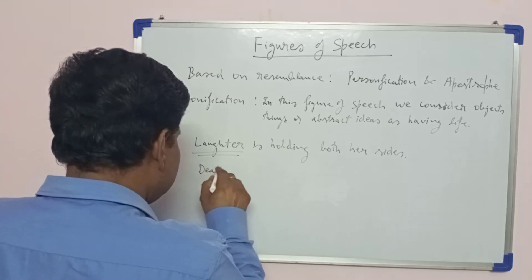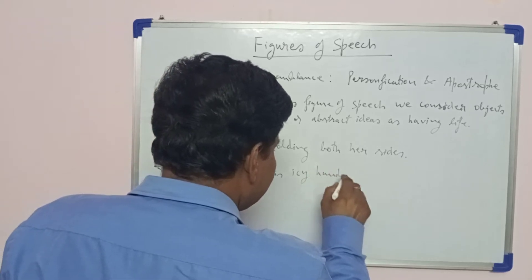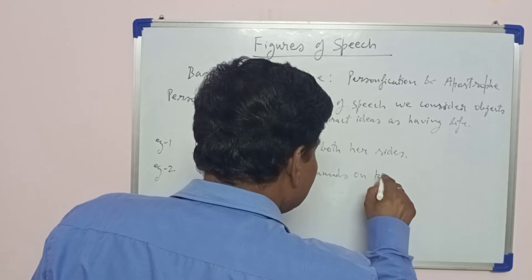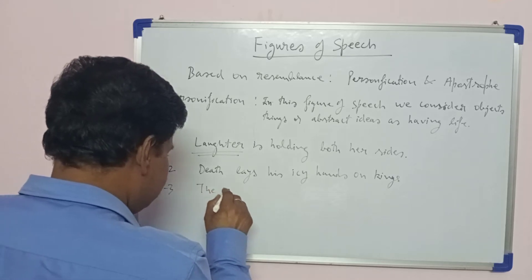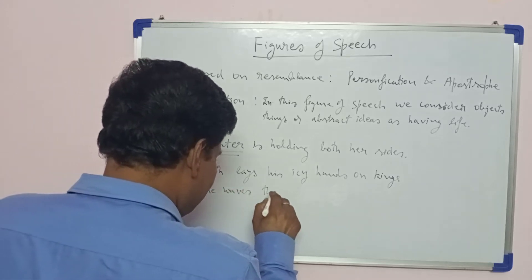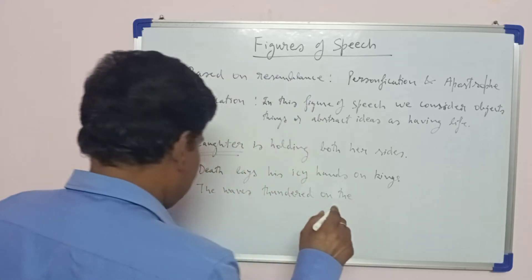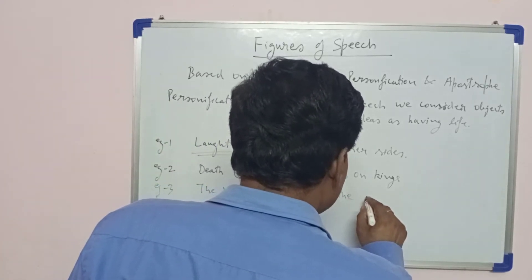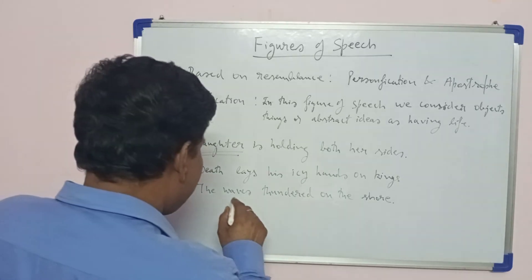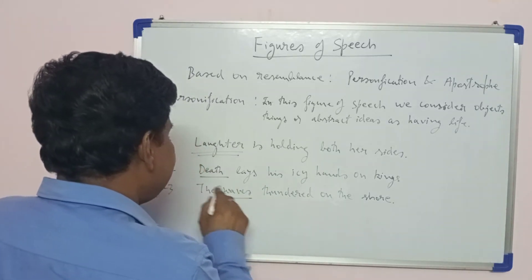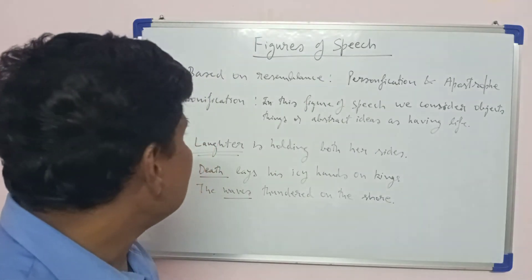Another example: 'Death lays his icy hands on kings.' And: 'The waves thundered on the shore.' So waves and death — these things are considered as having life. This is personification.